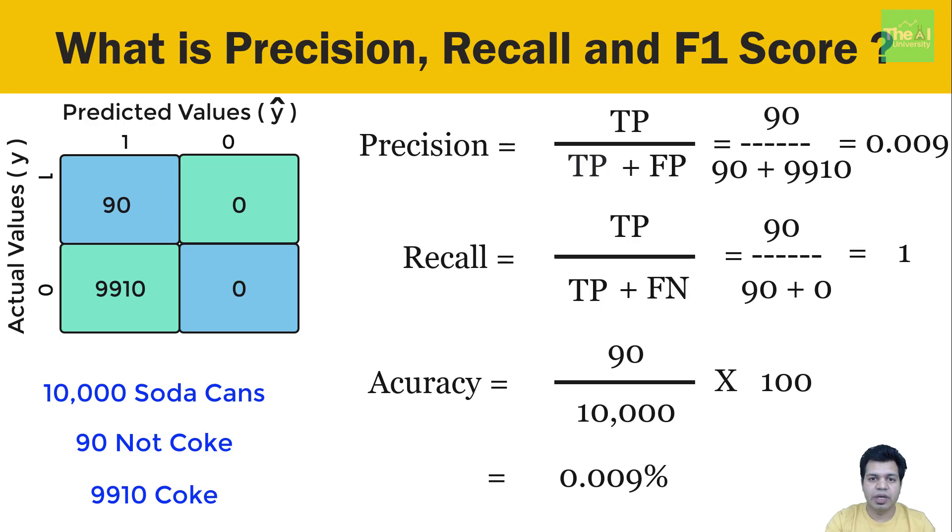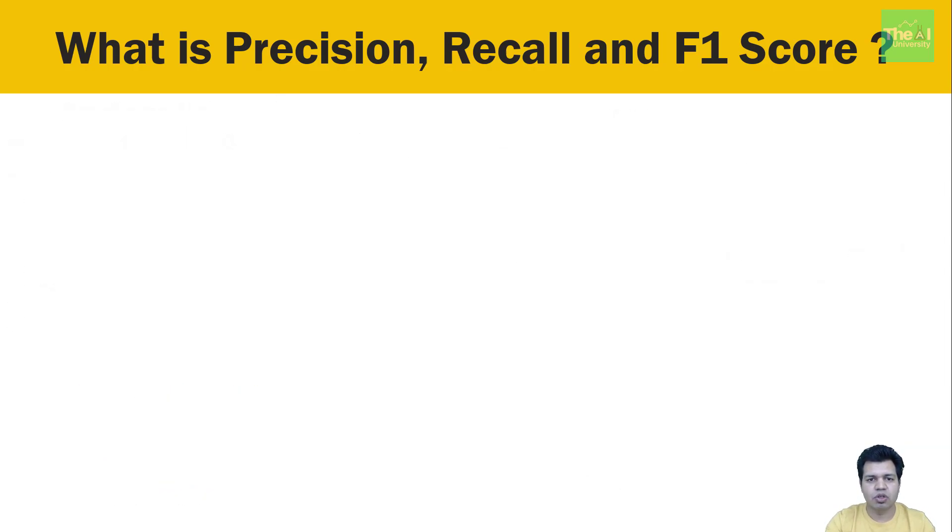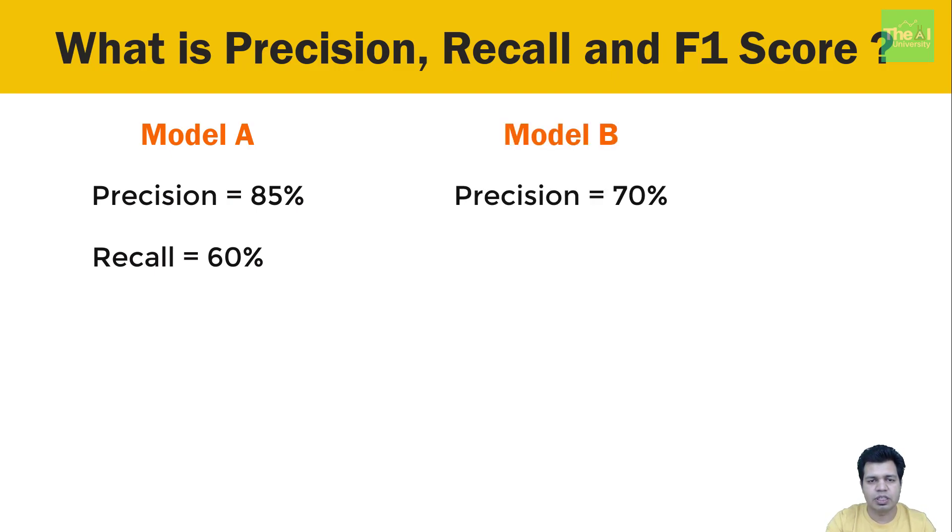Now precision and recall are very helpful in determining the performance of a model, but what if we want to compare performance of different models? In those cases, making comparison on the basis of precision and recall won't be a good experience. For example, let's say we have a model A with precision as 85% and recall as 60%, and then we have a model B where the precision value is 70% and recall value is 65%. Now if I ask which model is performing better, you will definitely find it a bit difficult to provide the answer. So how would we be able to determine that? Well, we can get the answer of that question by calculating just a single metric called F-beta measure.